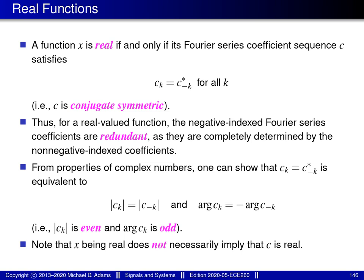As it turns out, this is the case. A function X is real if and only if its Fourier series coefficient sequence C satisfies conjugate symmetry. This result is quite important: it implies that half of the Fourier series coefficients are redundant — one half can be determined by the other. For instance, if you know C_K for all K greater than or equal to 0, you automatically know the C_K values for K less than 0.